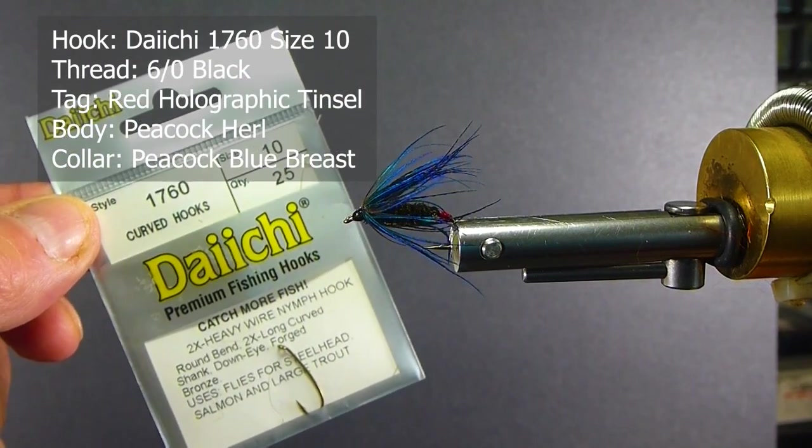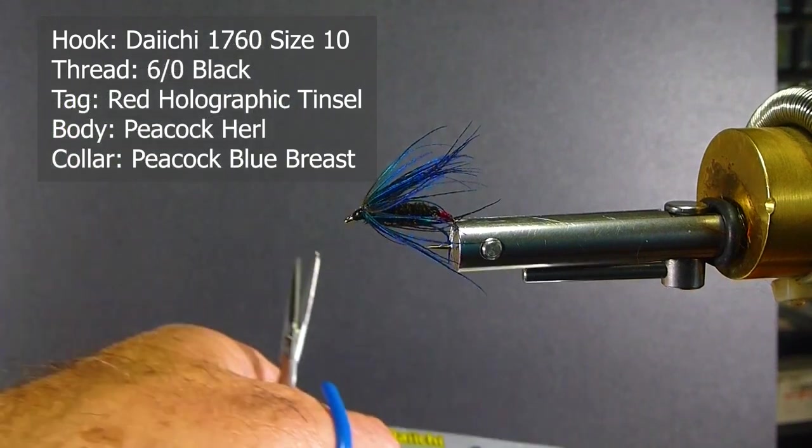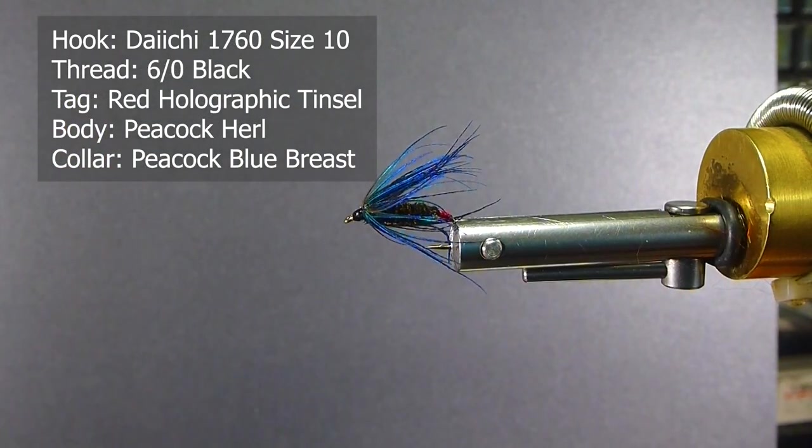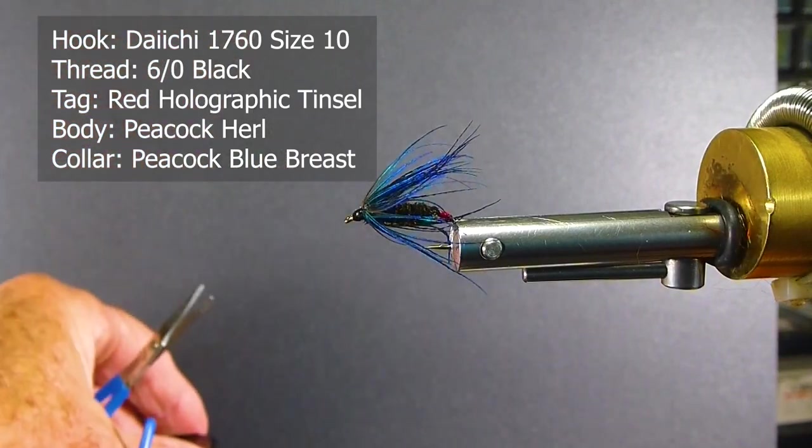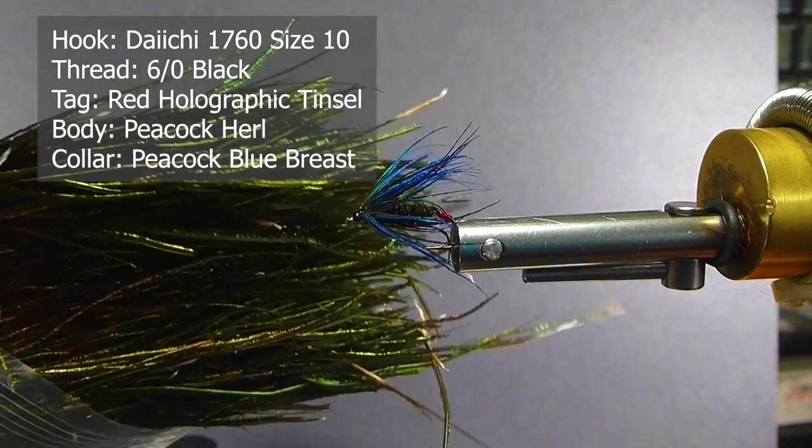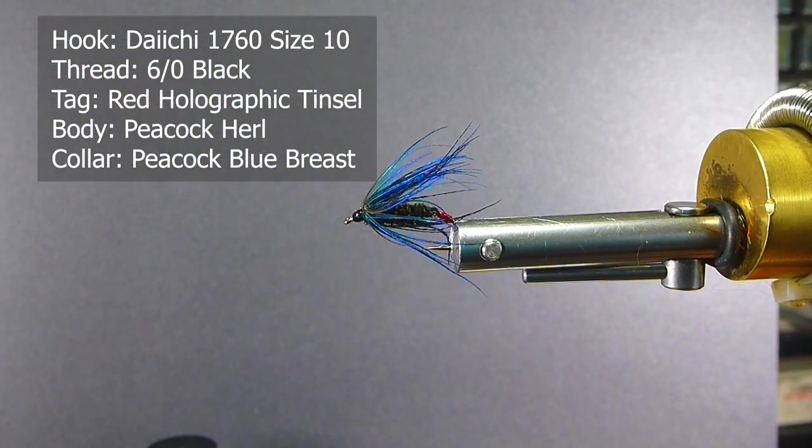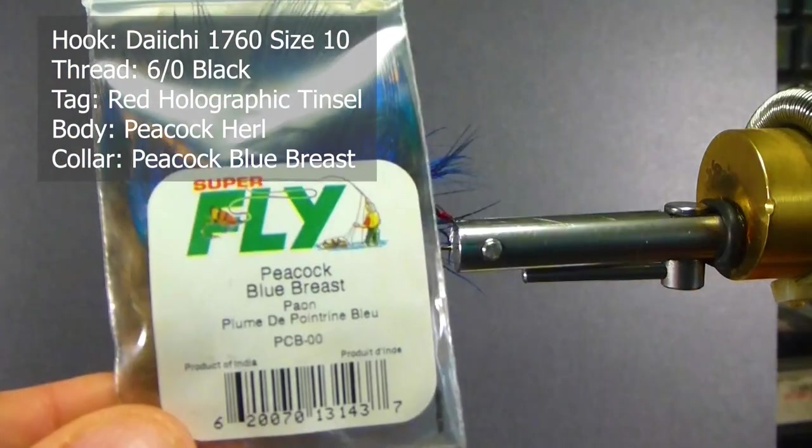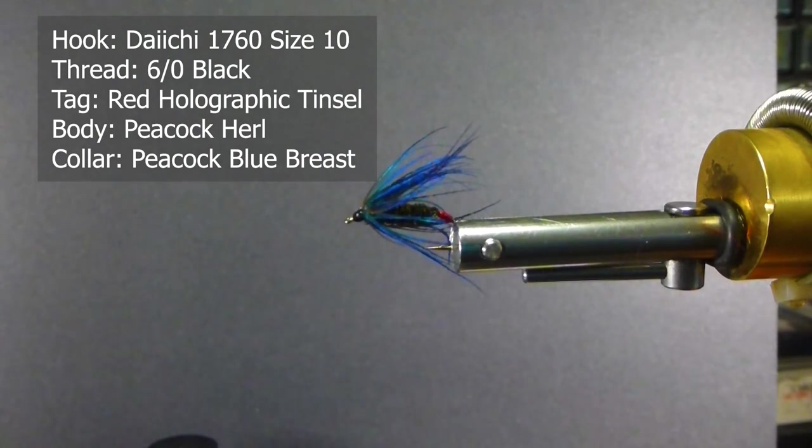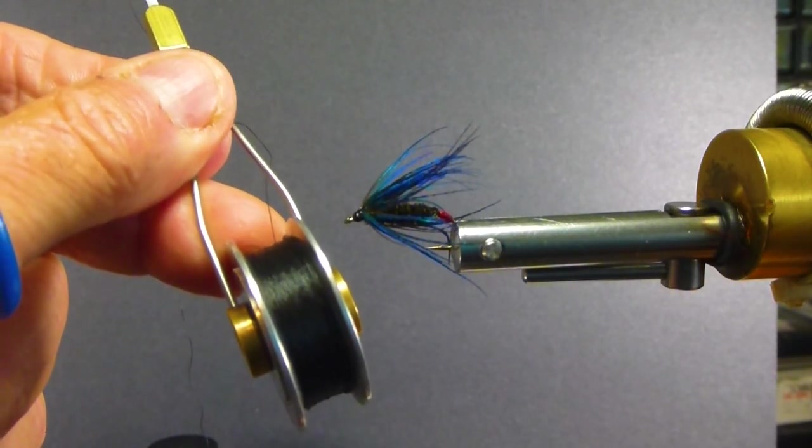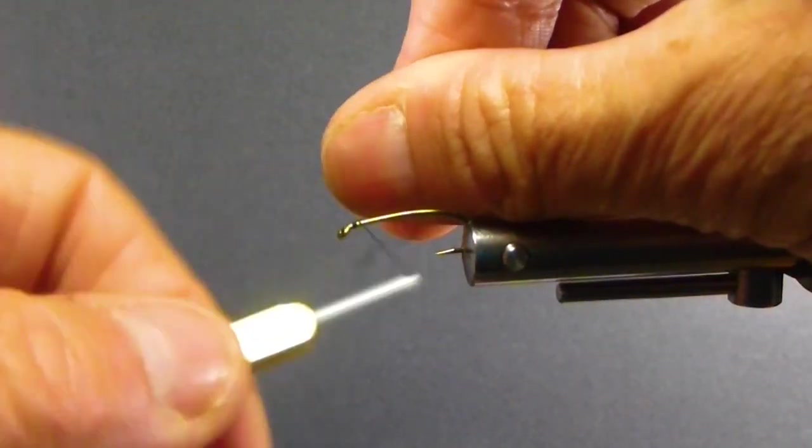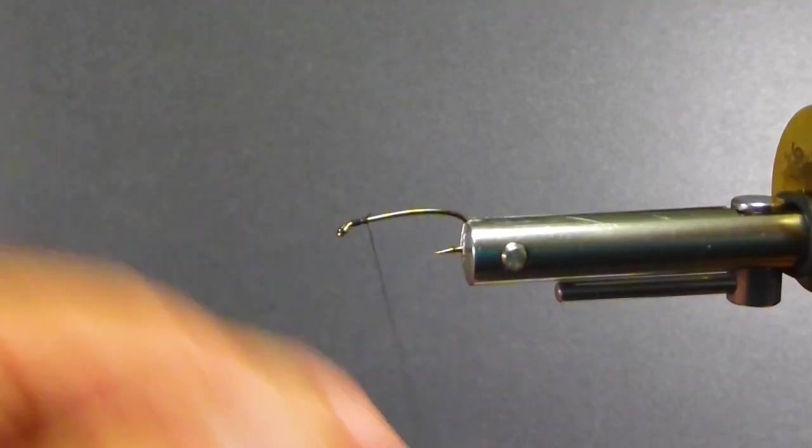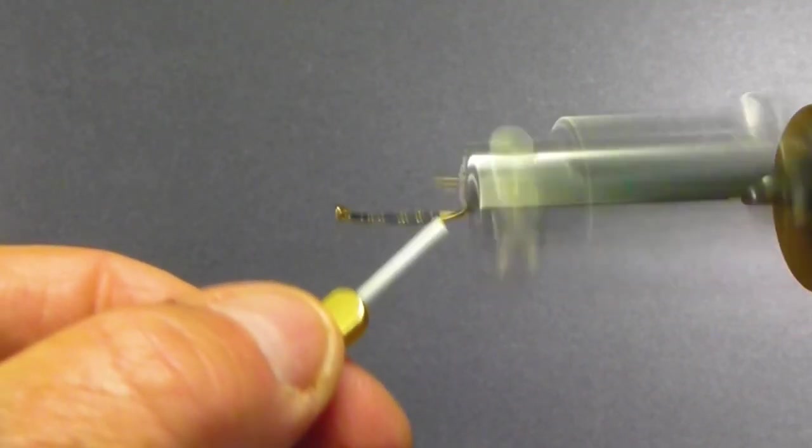I'm going to use a 1760 size 10 Daiichi hook with a bit of a curved shank. We're going to put a red butt on this with holographic red tinsel, coat that with some Solar Res. The body is going to be some Peacock Herl and the collar is going to be some Peacock Blue Breast feathers with nice iridescent coloration. Using six odd black thread. Let's get our hook in the vise and address our shank with the thread as usual to keep our materials all in place. Makes a stronger fly.